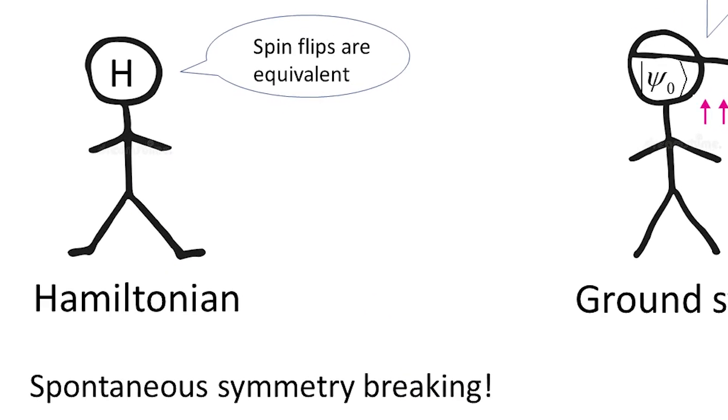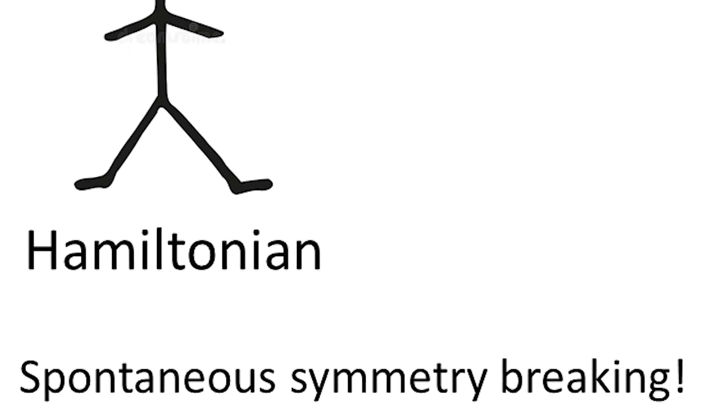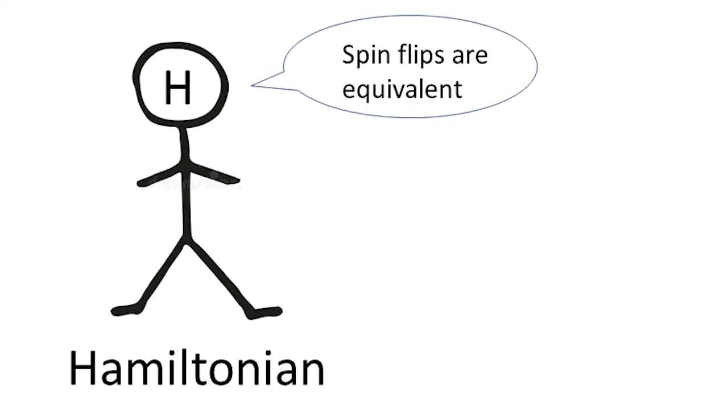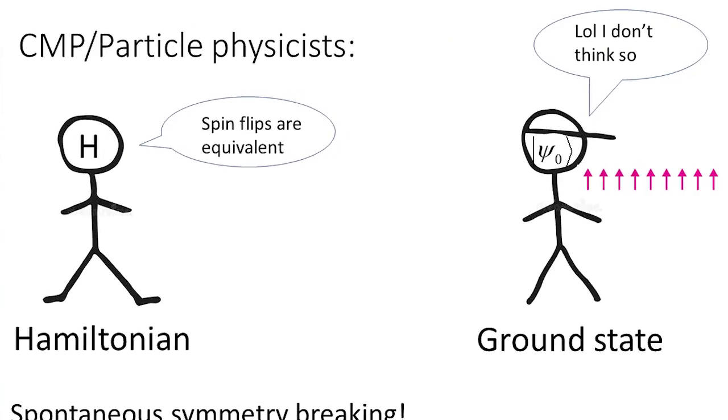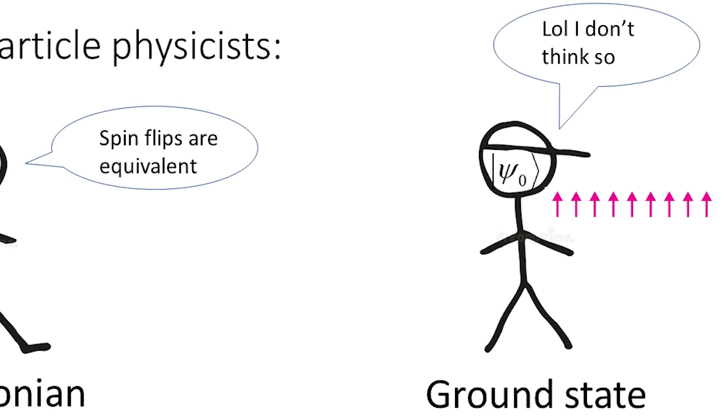In the condensed matter physics or particle physics community, people say that this is an example of spontaneous symmetry breaking. The idea here is that the Hamiltonian has some particular symmetry, saying that all the spin flips are the same, but then the ground state doesn't obey that. It just goes, okay I don't care about your symmetry, I'm just going to have all the spins pointing up. So that symmetry is broken. This is spontaneous symmetry breaking.